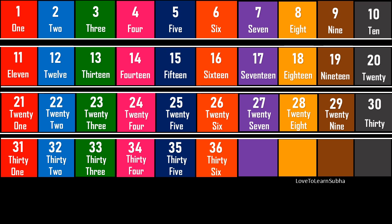36 - THIRTY (30) - S, I, X (6) - 36. 37 - THIRTY (30) - S, E, V, E, N (7) - 37. 38 - THIRTY (30) - E, I, G, H, T (8) - 38.